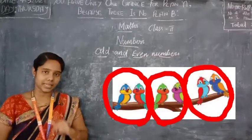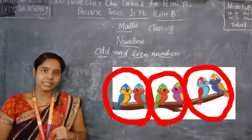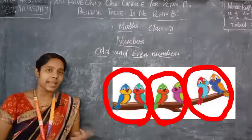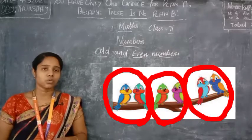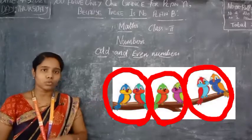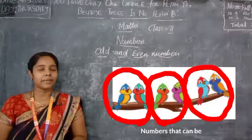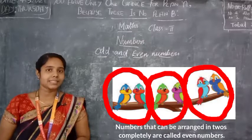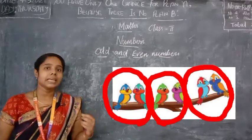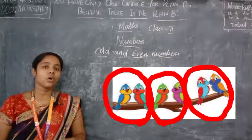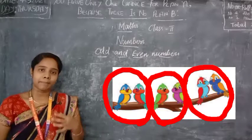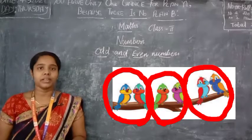Two birds make one set. We are forming three sets out of six birds. Now, is there any remaining? No — no remaining. So in the number six, no remaining is there when we pair them in sets of two. The numbers that can be arranged completely in twos are called even numbers. We arranged the six birds in three sets of twos with no remaining, so the number six is an even number.